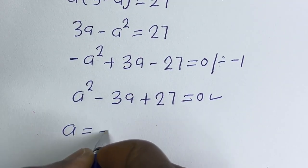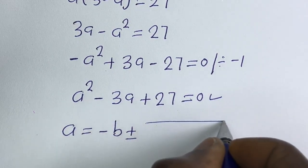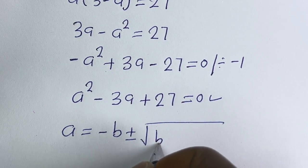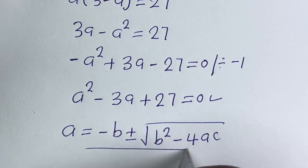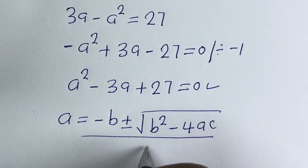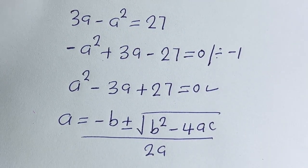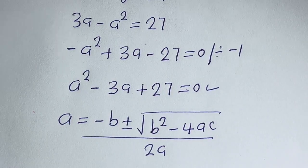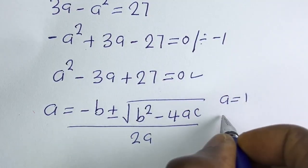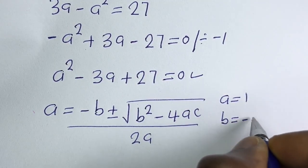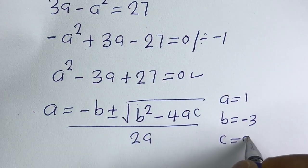Let's solve this using the quadratic general formula: a equals negative b plus or minus square root of b squared minus 4ac, over 2a. From this equation, a is equal to 1, b is equal to minus 3, c is equal to 27.